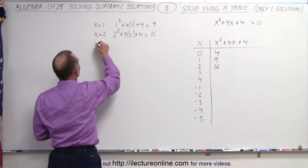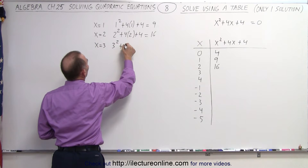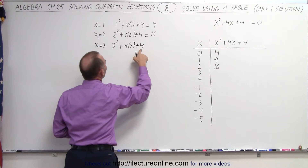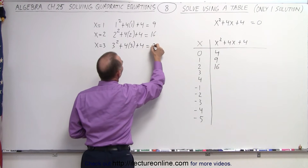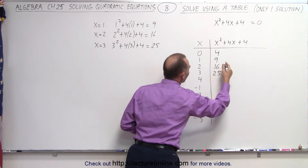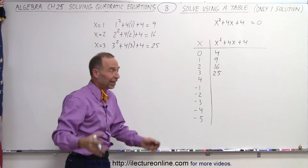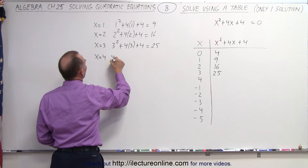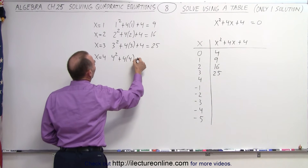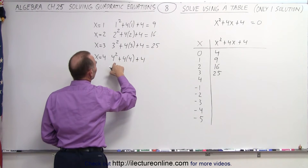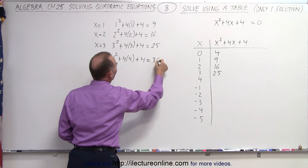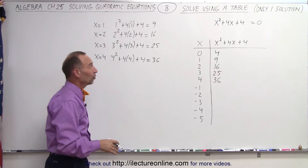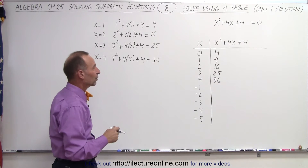Let's try x equals 3: that gives us 3 squared plus 4 times 3 plus 4, which is 9 plus 12 plus 4, that's 25. You can definitely see we're going in the wrong direction — it's just going to get bigger and bigger. And x equals 4 gives us 4 squared plus 4 times 4 plus 4, that's 16 plus 16 plus 4, which is 36. This pattern doesn't look like we'll find a solution going in a larger positive direction.